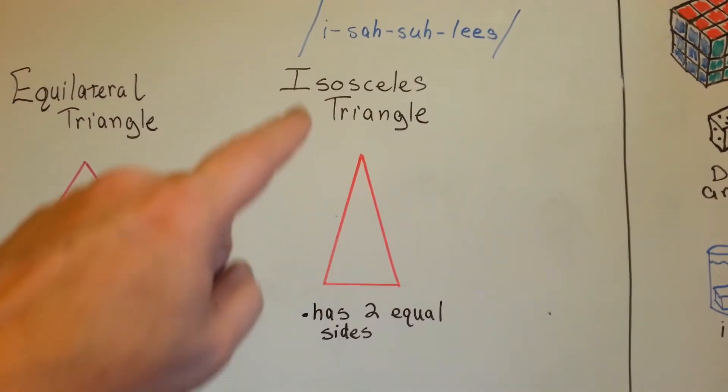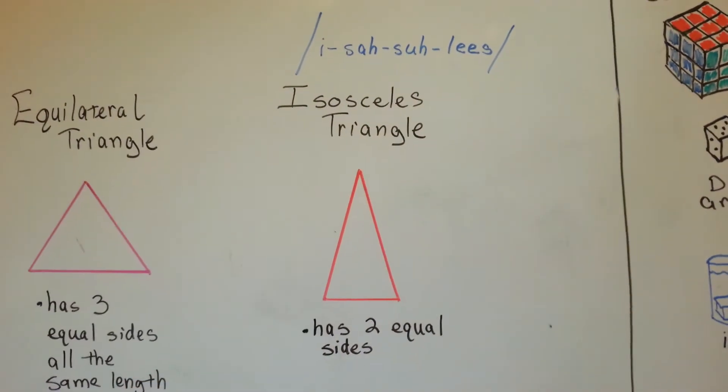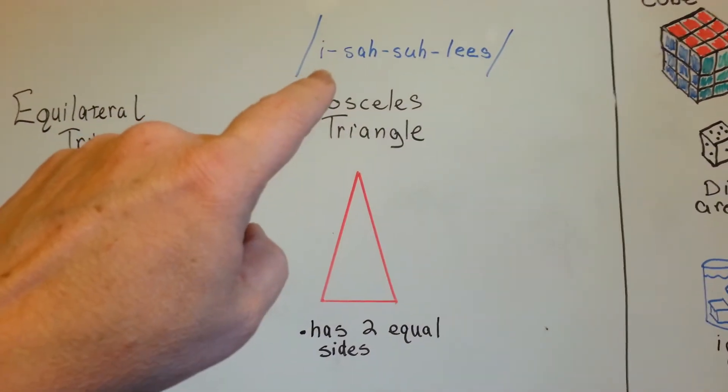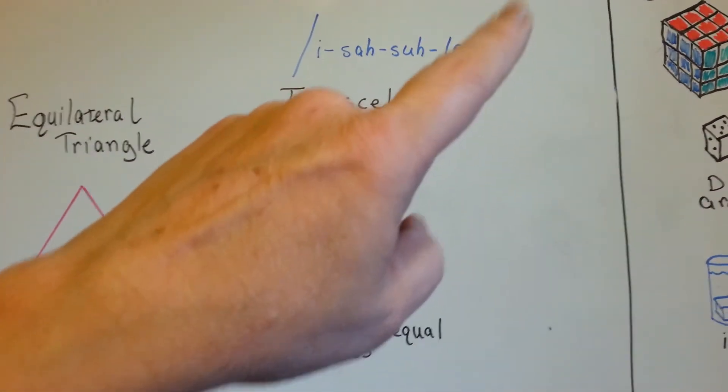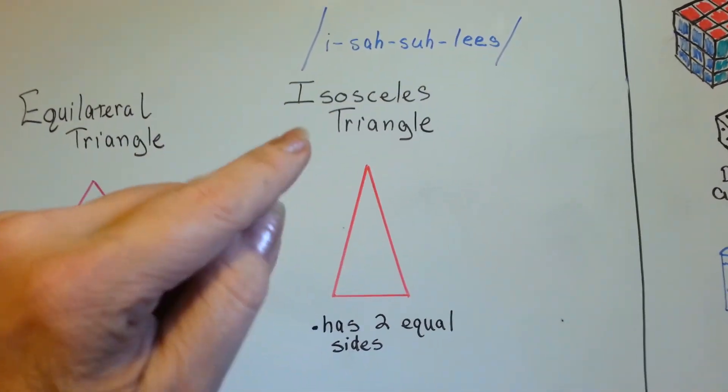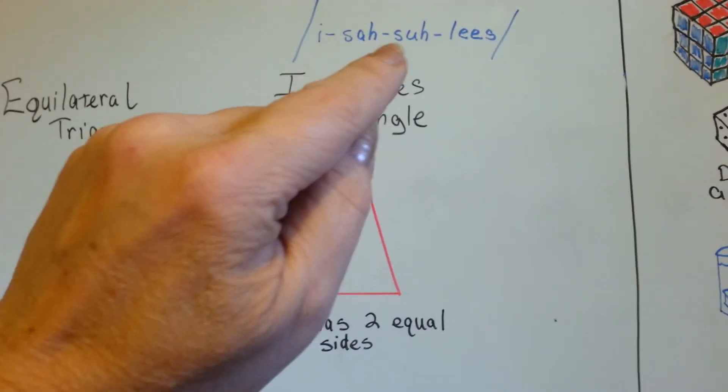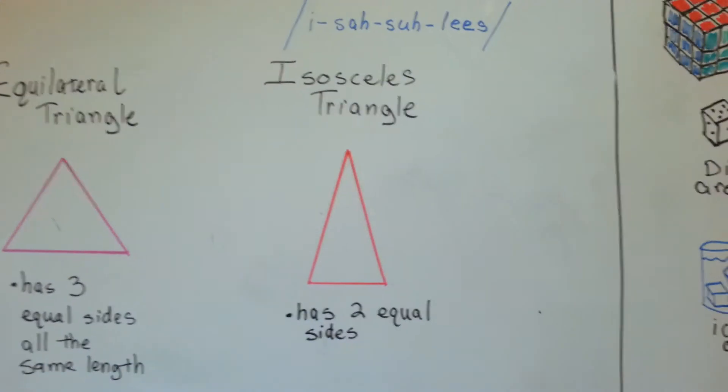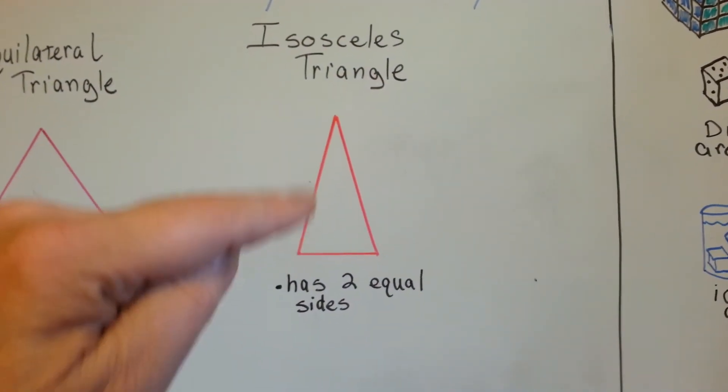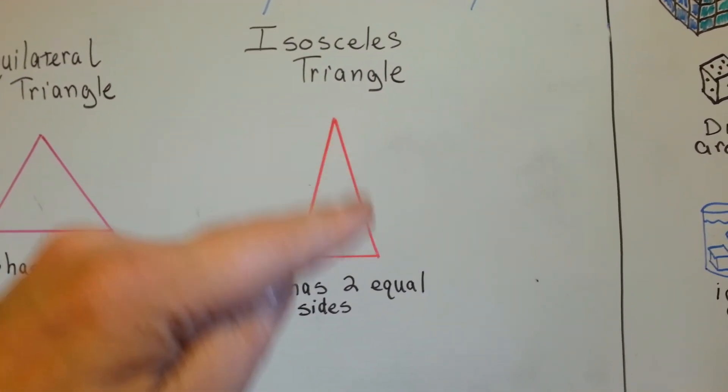The last one is spelled a little funny. I know this is third grade, so I put a pronunciation up here. When you see lines like this, that means that's how it's pronounced. This one is pronounced isosceles, I-sa-celes. An isosceles triangle has two equal sides. This one is the same length as this one.